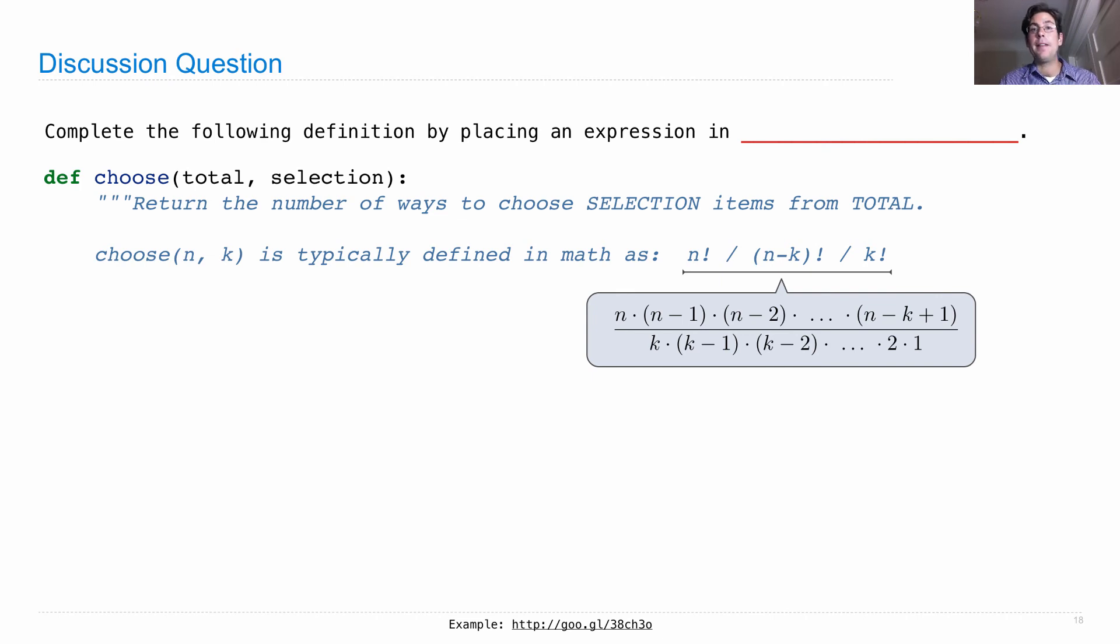That's n and then n minus one. If you're going to hold a third finger up, you'll choose among the three that remain, n minus two, until you have however many fingers you're going to hold up. You get k terms in the numerator.